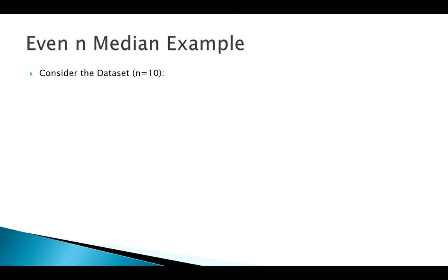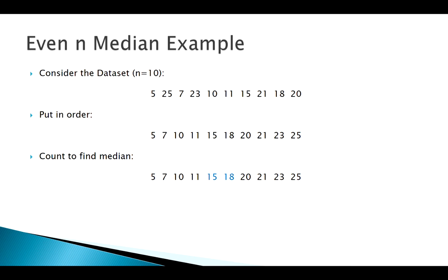A little different if it's even. So n equal to 10 here, similar numbers, slightly different. Got to put them in order. Same idea, if I count down from the outside, I find that I come to the middle, but I got two values in the middle, so what do we do? Just take the average, 15 plus 18 over 2 gives me a median of 16.5.